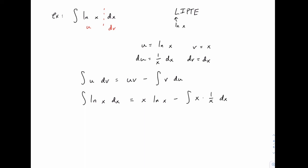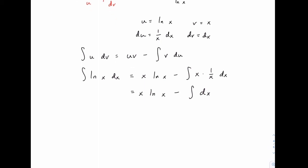Now look at that. x times 1 over x simplifies nicely to just 1. So we end up with the integral of 1 dx or just dx. That we can integrate. We've already done this. So we have x times the natural log of x minus x plus c.